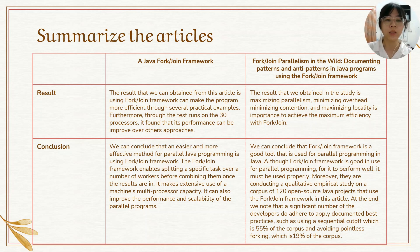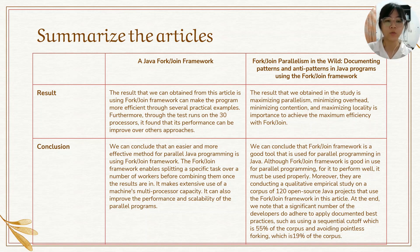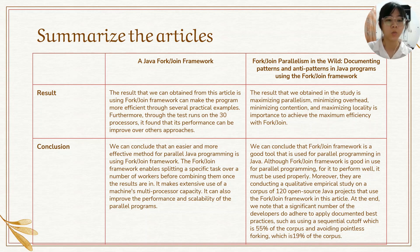In the first article, we can conclude that an easier and more effective method for parallel programming is using the Fork/Join framework. The Fork/Join framework enables splitting a specific task over a number of workers before combining them once the results are in, making intensive use of machine multiprocessor capacity. It can also improve the performance and scalability of parallel programs. In the second article, we can conclude that the Fork/Join framework is a good tool for parallel programming in Java. Although it is good for parallel programming, it must be used properly for it to perform well. A qualitative empirical study was conducted on a corpus of 120 open source Java projects. We know that a significant number of developers fail to apply documented best practices, such as using a sequential cutoff — in 5% of the corpus — and waiting for parallel forking — in 90% of the corpus.